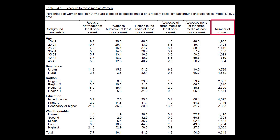The last column shows the denominator — in this case, the number of women age 15–49 interviewed in the survey. Denominators vary from table to table, so it's important to find out which population is examined in the table. This table shows us that 8,348 women age 15–49 were asked about their exposure to mass media.